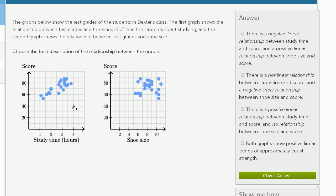There is a non-linear relationship between study time and score, and a negative linear relationship between shoe size and score. That doesn't seem right either. A non-linear relationship would not be easy to fit a line to, and this one seems like a line would be very reasonable. There doesn't seem to be any type of relationship between shoe size and score. I wouldn't pick this one either.